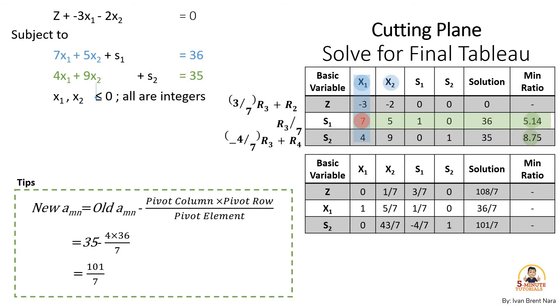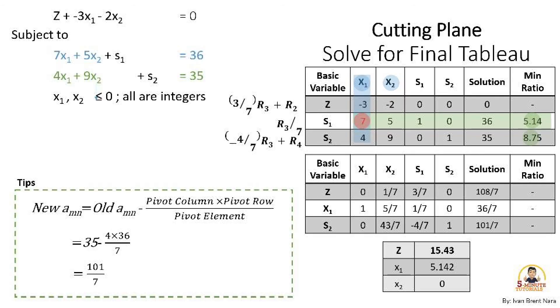But here's a tip. Follow this formula to immediately solve for any respective coefficient. Its new value of cell A row M by column N equals old value of cell A minus pivot column times pivot row. The product of it will be divided by the pivot element.